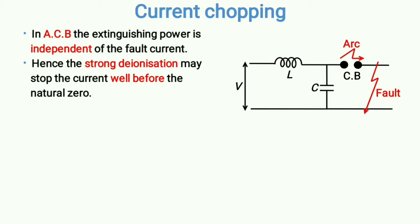Because the extinguishing power is independent of fault current, even if the fault current is small in magnitude, the extinguishing power remains very high. This results in an abrupt fall of fault current to zero. The current is supposed to be stopped at the natural zero point, because at natural zero the arc gets vanished automatically — that is the concept of the natural zero method, also called the low resistance method.